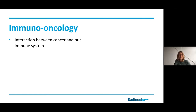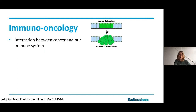Immuno-oncology describes the interaction between cancer and our immune system. Our own immune system is a very powerful tool in order to eliminate cancer cells. Cancer cells can develop, for example, after oncogenic mutations in normal cells, and this will lead to abnormal proliferation of cells and finally to the formation of tumors.